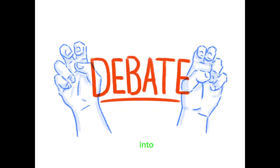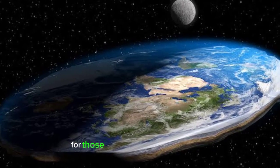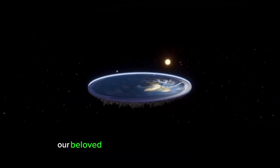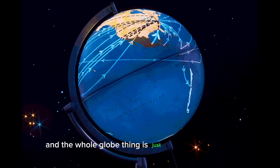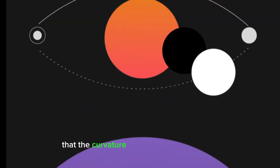All right, before we jump into the space missions, let's quickly recap the flat earth theory for those who might not be in the loop. According to this theory, our beloved Earth is actually flat as a pancake, and the whole globe thing is just a massive cover-up. Some flat earthers argue that the curvature we're taught to believe in is just an illusion...